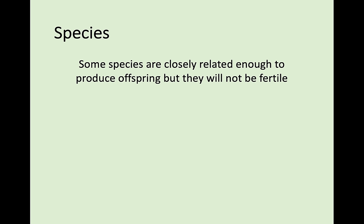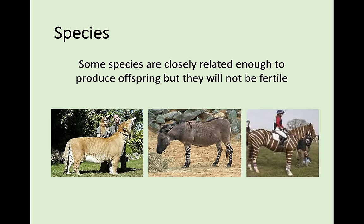There are other cases of this in the wild. Different species can reproduce to produce hybrid offspring. All these animals are infertile but are the product of two species reproducing. A liger is a mix between a lion and a tiger. A zonkey is a zebra and a donkey. A zorse is a zebra and a horse. These are all real, but all infertile because they come from different species reproducing.